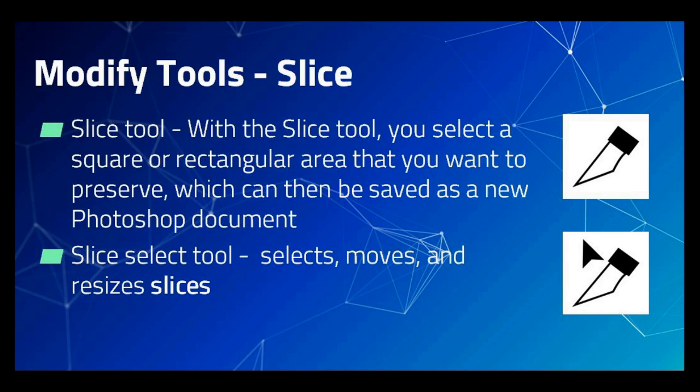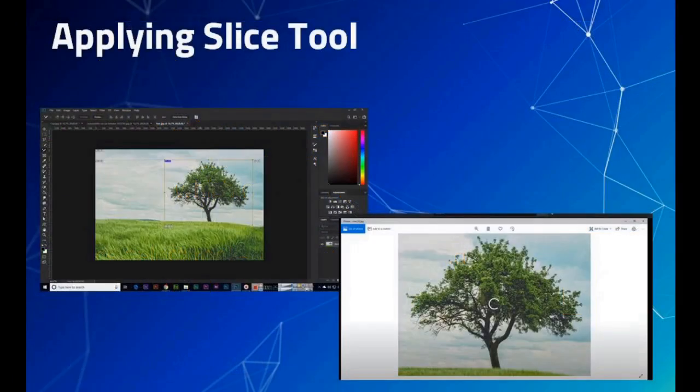The Slice Select tool is used to select more precisely sized slices. For example, we are going to slice the tree from a given image and save the tree image as a separate document.